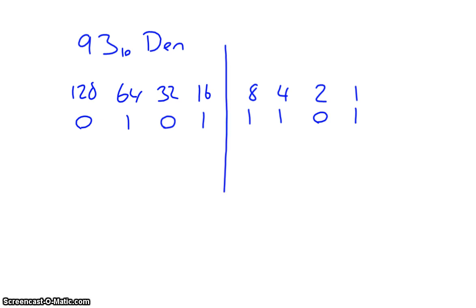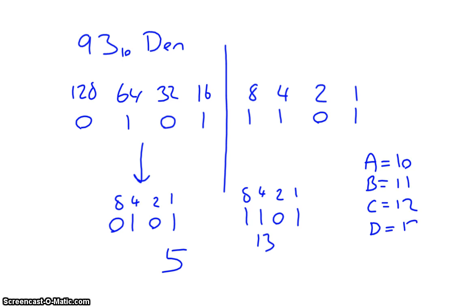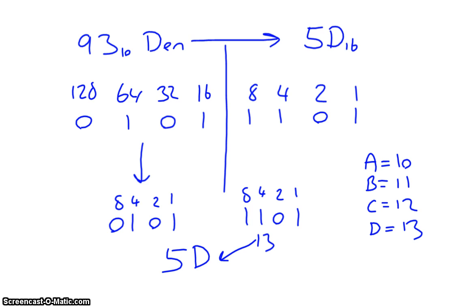To get this into hex, split it down the middle into 4 bits. We've got 1010 — using 1, 2, 4, 8: 4 plus 1 is 5. Then 1101 — 8 plus 4 is 12, plus 1 is 13. Now we count in hex: A is 10, B is 11, C is 12, D is 13. Therefore 13 is D. So 93 in denary in hex is 5D.